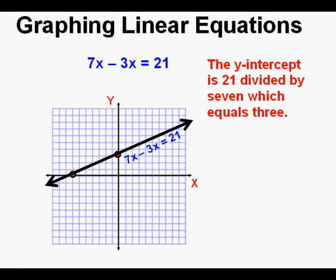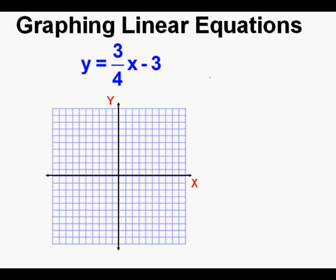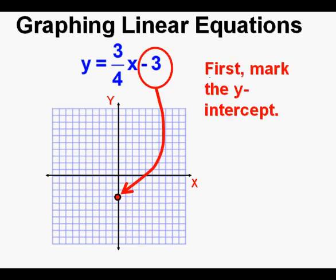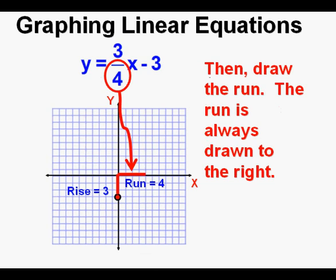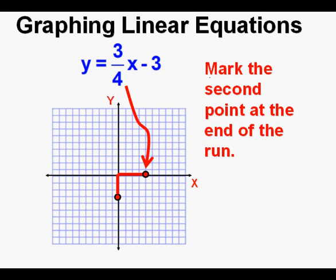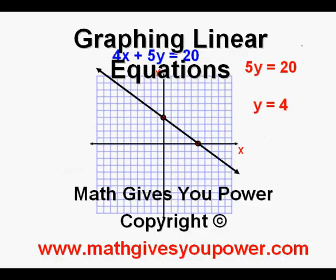Now to review how to graph an equation in slope-intercept form, with y by itself on one side of the equal sign. Mark the y-intercept first on the y-axis — here it's marked at y equals negative 3. We look at the numerator of the slope in front of the x-term and go up or down from the y-intercept. Since this is 3, we go up 3. Then we look at the denominator and go to the right that many units — the run is always to the right. We go 4 units to the right, mark the second point, and with two points we draw the line. This has been graphing linear equations from standard form and slope-intercept form. Thanks for viewing.